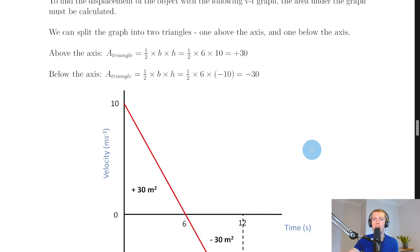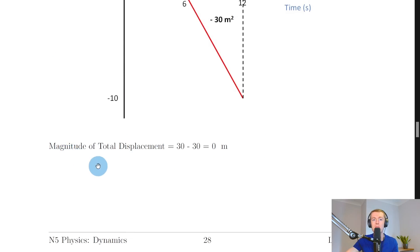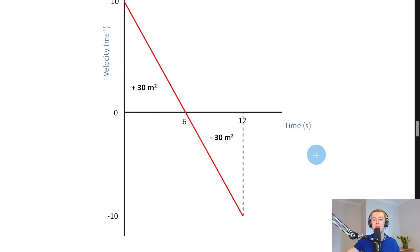If I add these values together I get 30 minus 30 which gives me 0 for my total area and that means the magnitude of my total displacement i.e. the distance traveled here is 30 minus 30 which gives me 0 meters. So this would be the graph and therefore the displacement for an object that's been thrown up into the air and then travels back down to the exact same position as before so that the total displacement is 0.